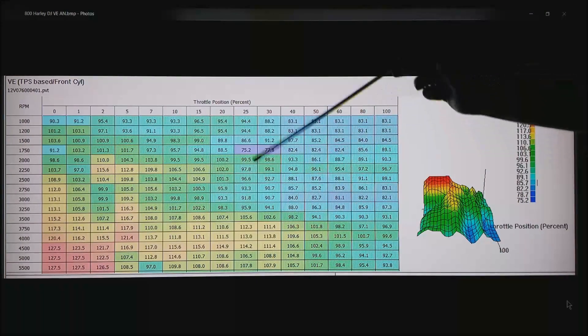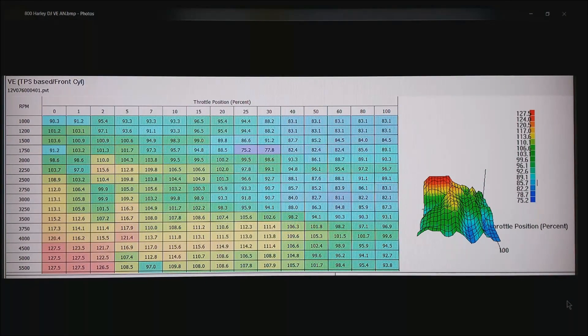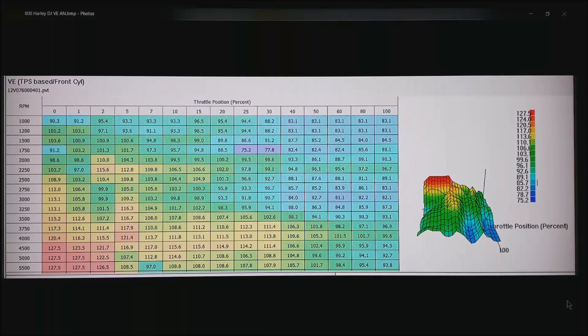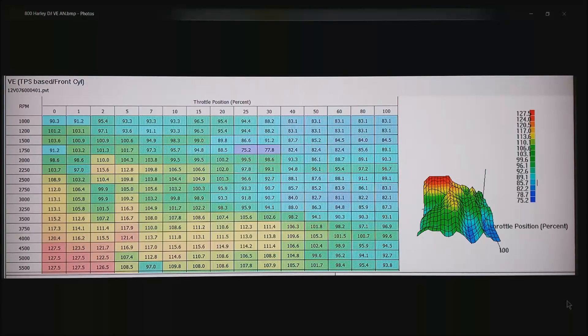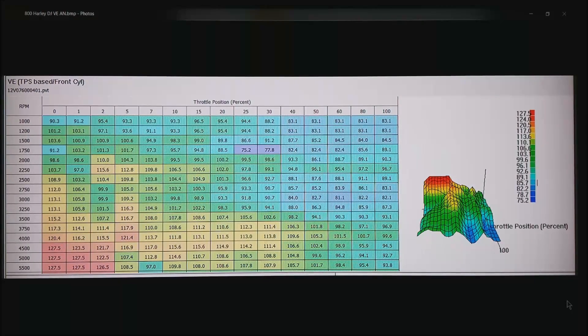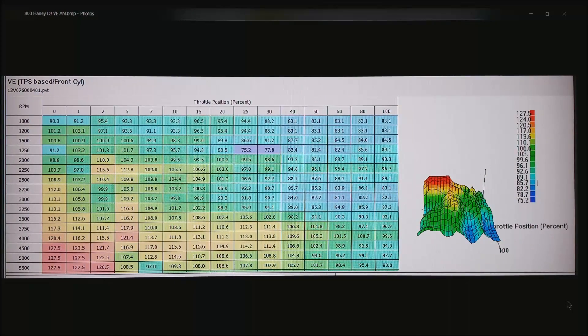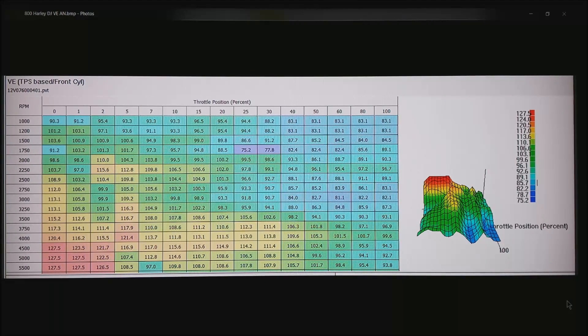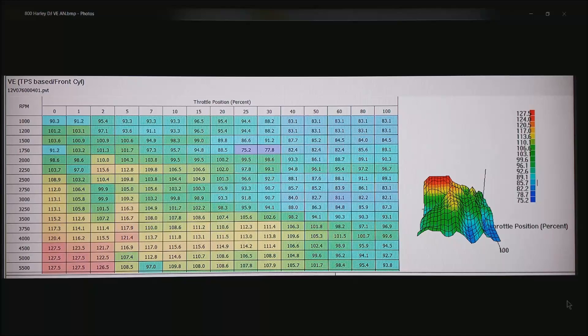So what we end up having is violent changes in the VE table as we're trying to balance out the mixture from the front cylinder to the rear cylinder. Normally anything that looks like this sort of peaks and valleys is an indication you have a problem. Most VE maps on most motors are a very gradual curve.